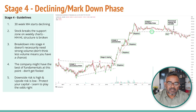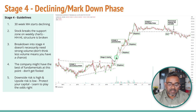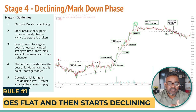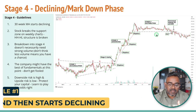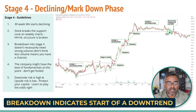Moving on to Stage 4 — how do you identify a stock in a Stage 4 distribution or markdown phase? The rule is almost similar to Stage 1, but applied after a stock has moved up. After a stock has moved up and gone sideways, and then the stock starts dropping — Stage 4 is the exact opposite of Stage 1. The stock breaks down from a pivot point, meaning it breaks below the low point of the sideways range. That is when a stock is entering a Stage 4 downtrend.